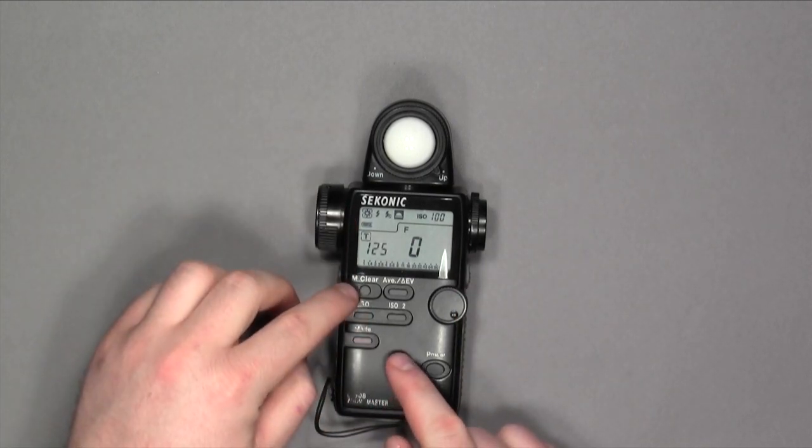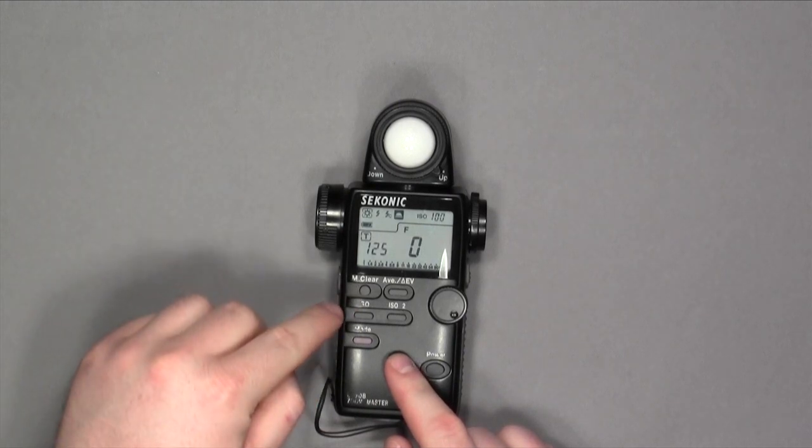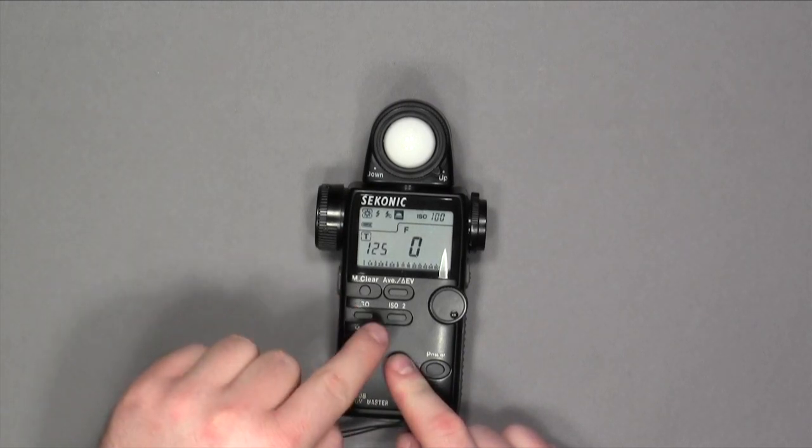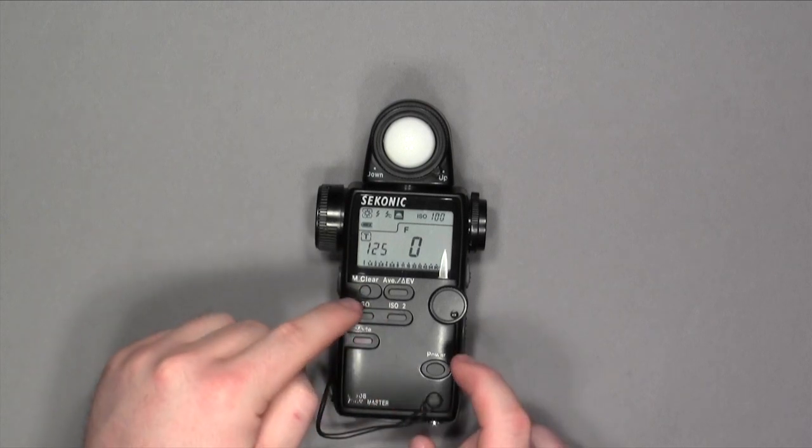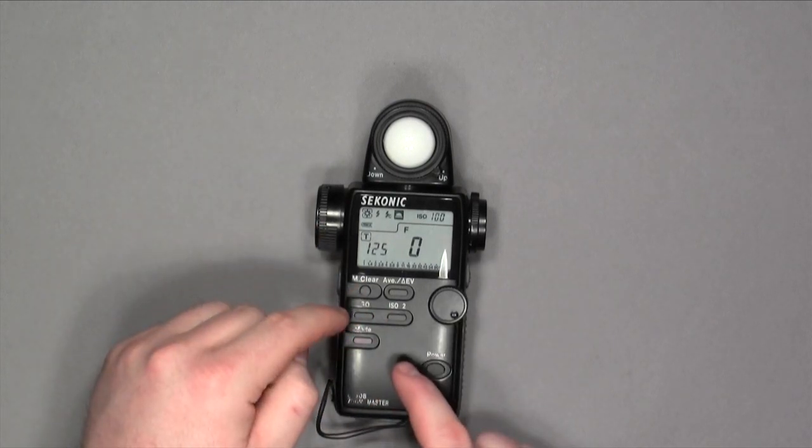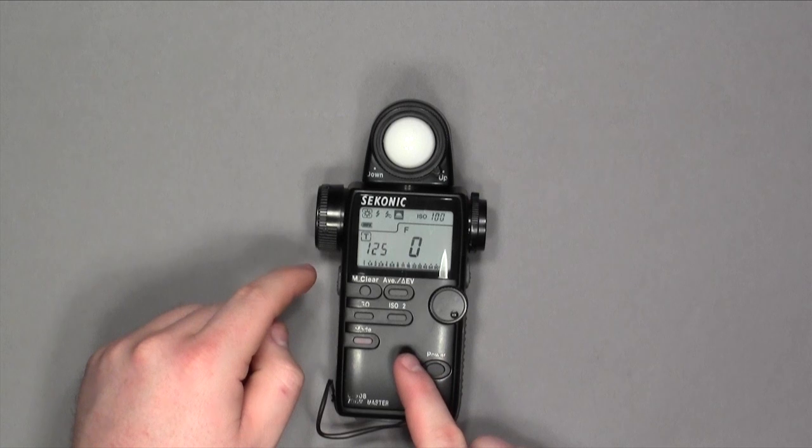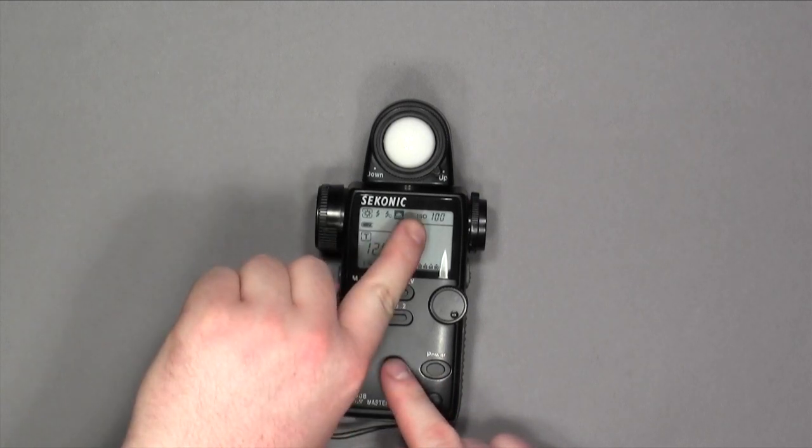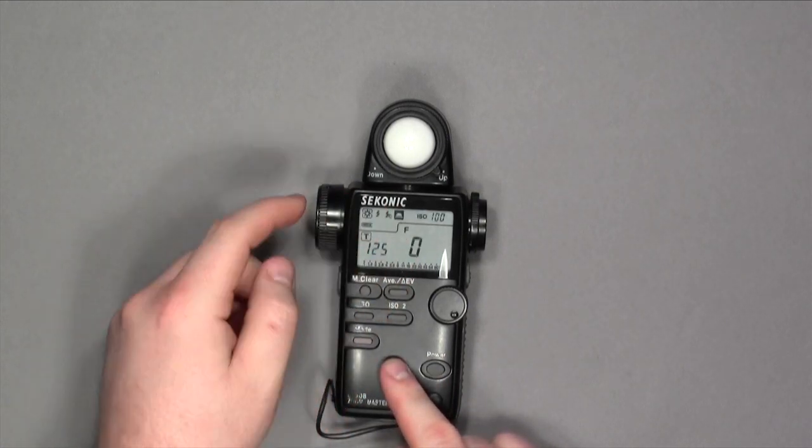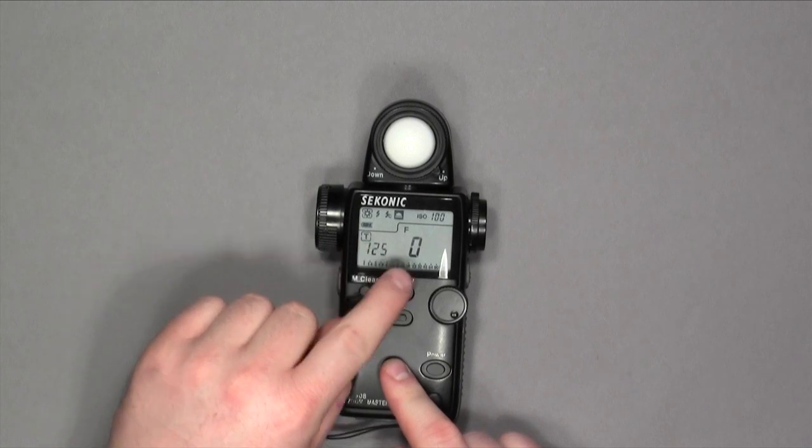We have a memory clear button, which is an option if you have one ISO saved and then a different ISO saved. You would do that if you had two cameras that you're working on in the studio. Again, your ISO is in the top right corner, your shutter speed, and your f-stop.